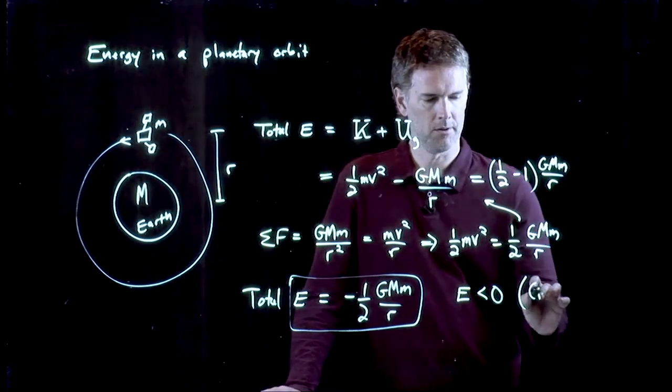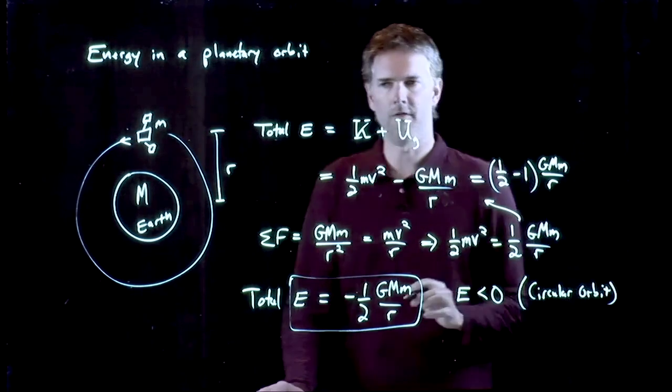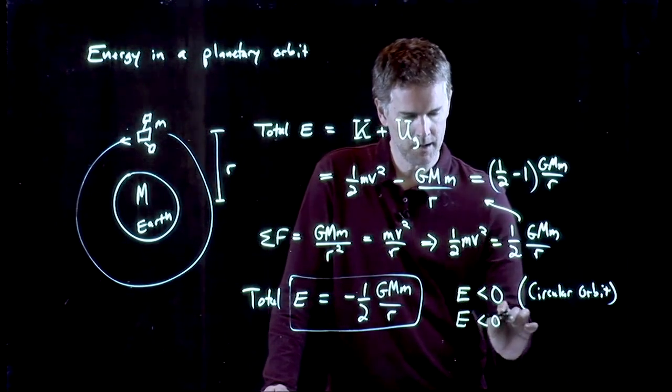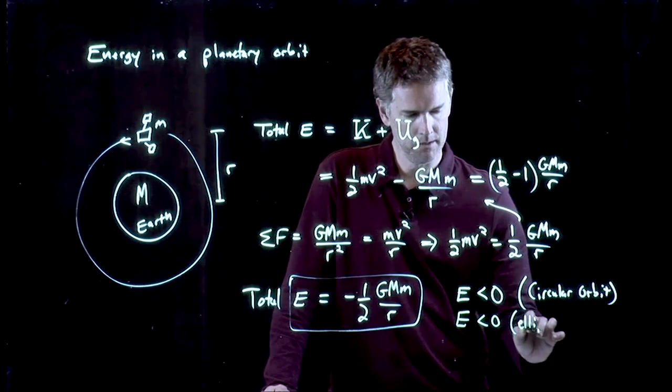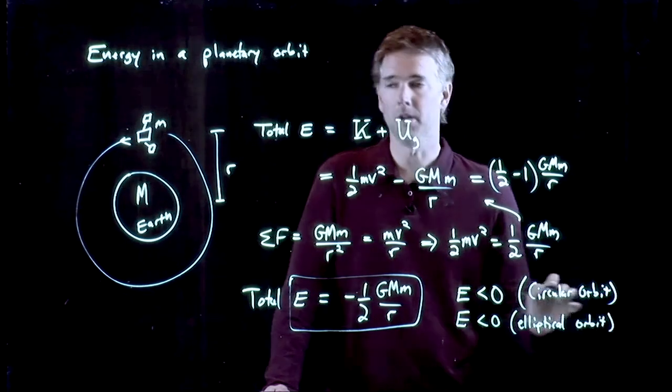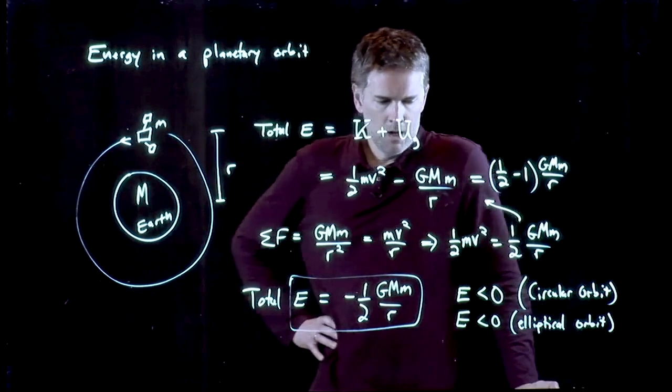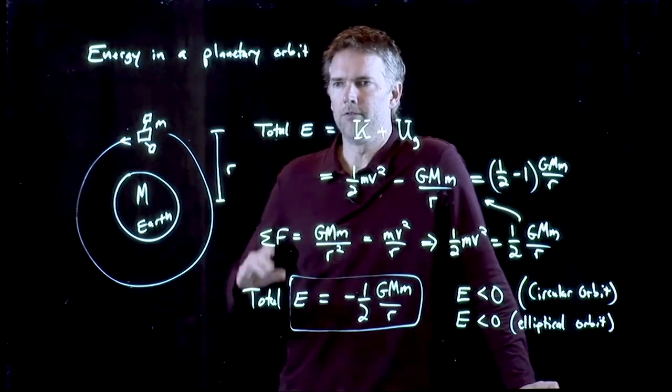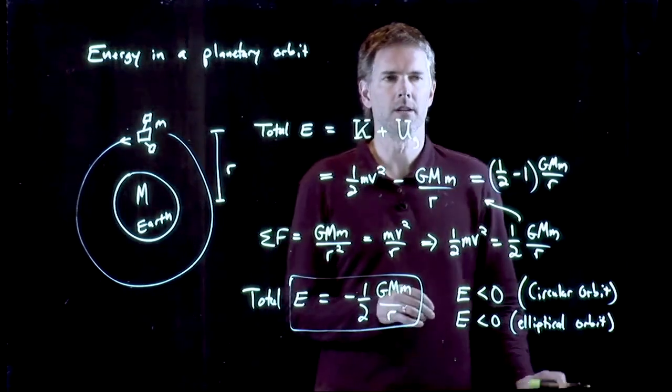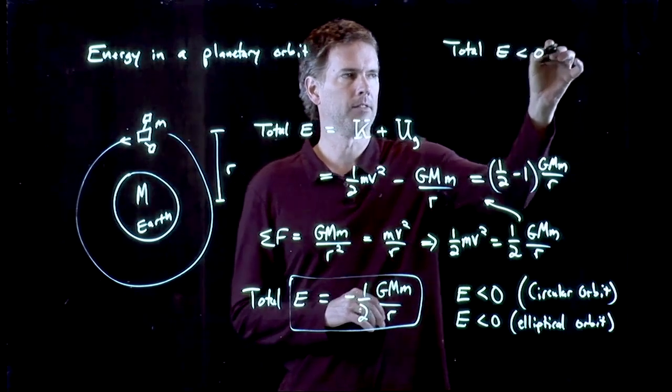We just did a circular orbit. You can, in fact, prove this also for elliptical orbits. It's a little more complicated, but the answer is the same. The total energy is also going to be negative for an elliptical orbit. So we're back to this question of negative energy. What do we mean by energy less than zero? Total energy less than zero.